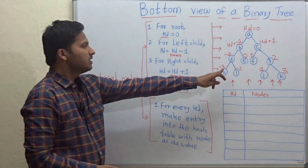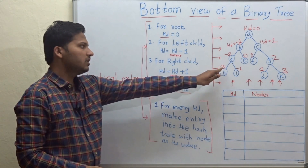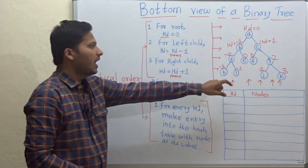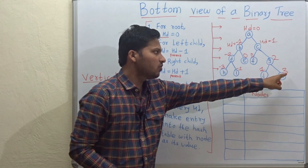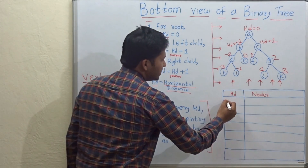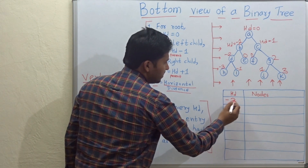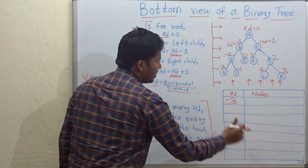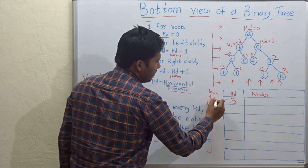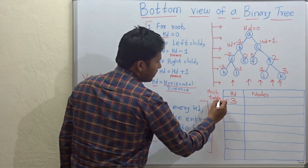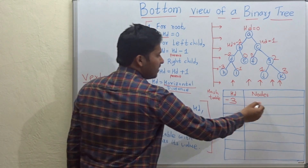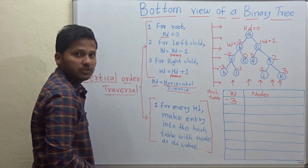So the minimum horizontal distance hd is equal to minus 3 and the maximum distance is equal to 3. We enter those distances in a hash table in which hd is the key and nodes are the values.